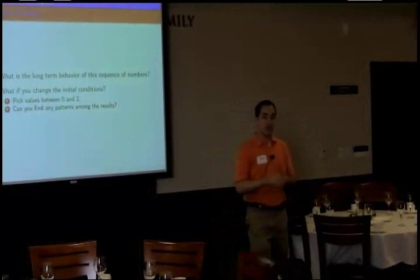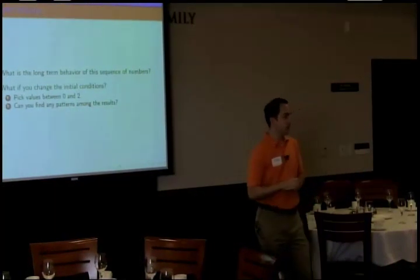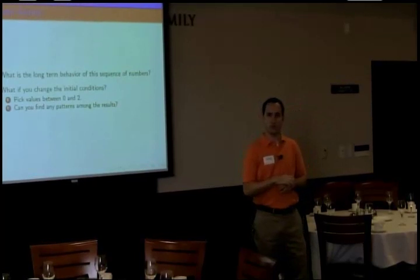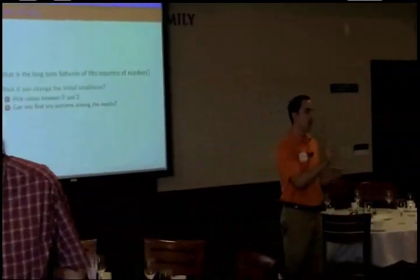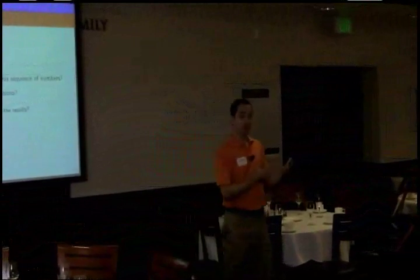Now I want you to change the initial conditions ever so slightly. Go to where the 1.2 is and change that number to other numbers — choose numbers between 0 and 2, otherwise you'll get results that don't make much sense. Change those initial conditions slightly and see what happens to your results. More than that, see if you can find any sort of patterns among these results. Double-tap the number to edit it, then type whatever new number you want in its place. Pick numbers between 0 and 2, look for patterns, and think about what conclusions we could draw about this chaotic system.